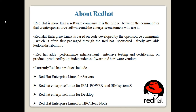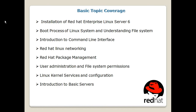Red Hat adds performance enhancements which are produced by top independent software and hardware vendors. Red Hat also introduces various courses on its products. There are many products from Red Hat including Red Hat Enterprise Linux for servers, Red Hat Enterprise Linux for IBM Power and IBM Z systems, Red Hat Enterprise Linux for Desktops, and Red Hat Enterprise Linux for HPC head nodes — and many more products are out there. Red Hat gives certifications on all those products.